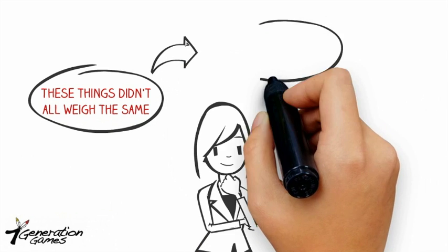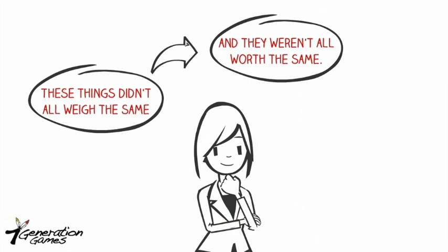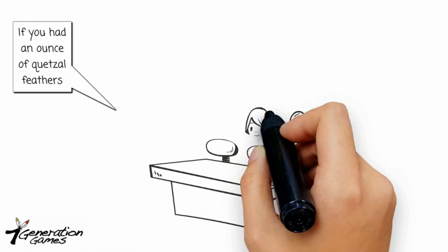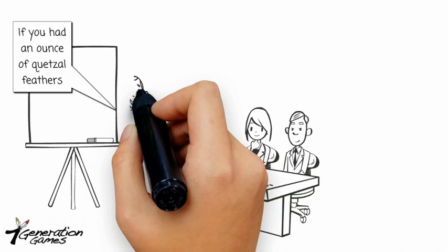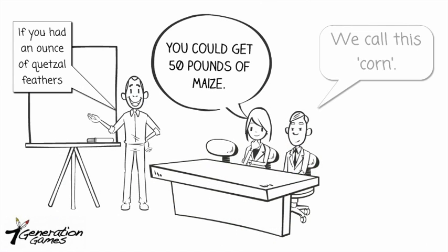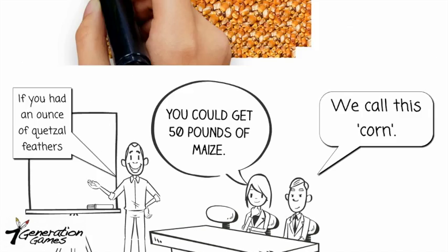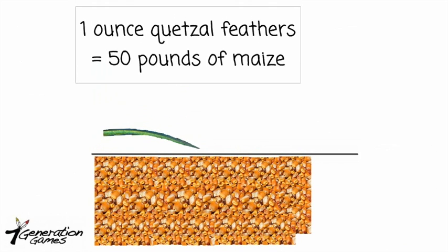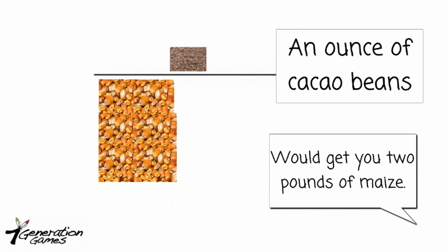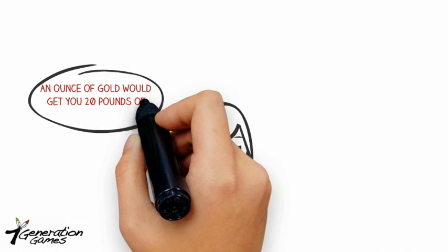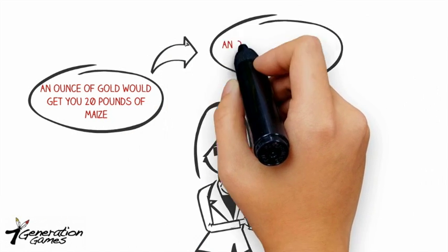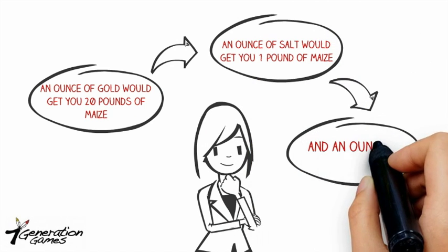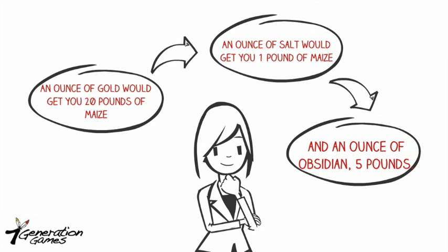These things didn't all weigh the same and they weren't all worth the same. If you had an ounce of Quetzal Feathers, you could get 50 pounds of maize — we call this corn. An ounce of cacao beans would get you 2 pounds of maize. An ounce of gold would get you 20 pounds of maize. An ounce of salt would get you 1 pound of maize, and an ounce of obsidian, 5 pounds.